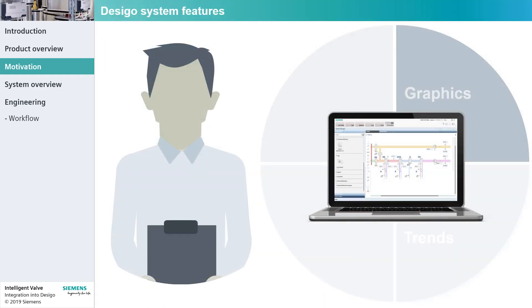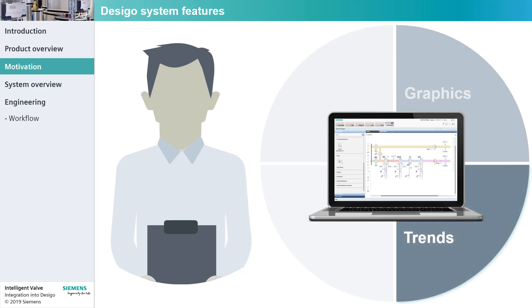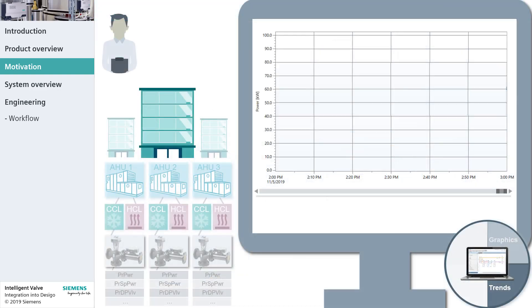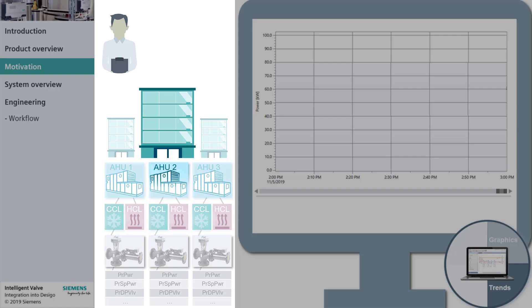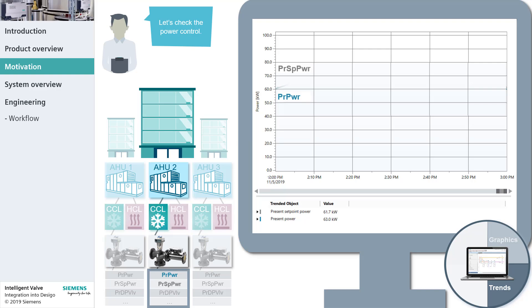Mike obtained a good overview of the operating states. To get more information about the system, Mike starts the Trend application to track data point values or states over time. Mike can do this in several ways. One option is to focus solely on a single intelligent valve and to track several of its data points simultaneously. For example, Mike can verify whether the valve's power control is working as intended. As we can see, the measured power is precisely following the set point. Everything seems to be okay.